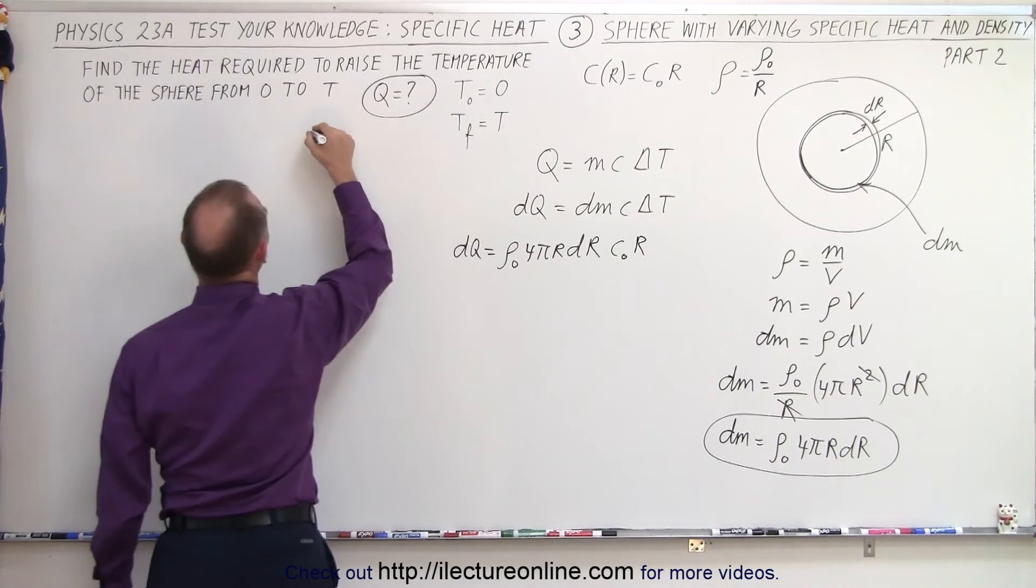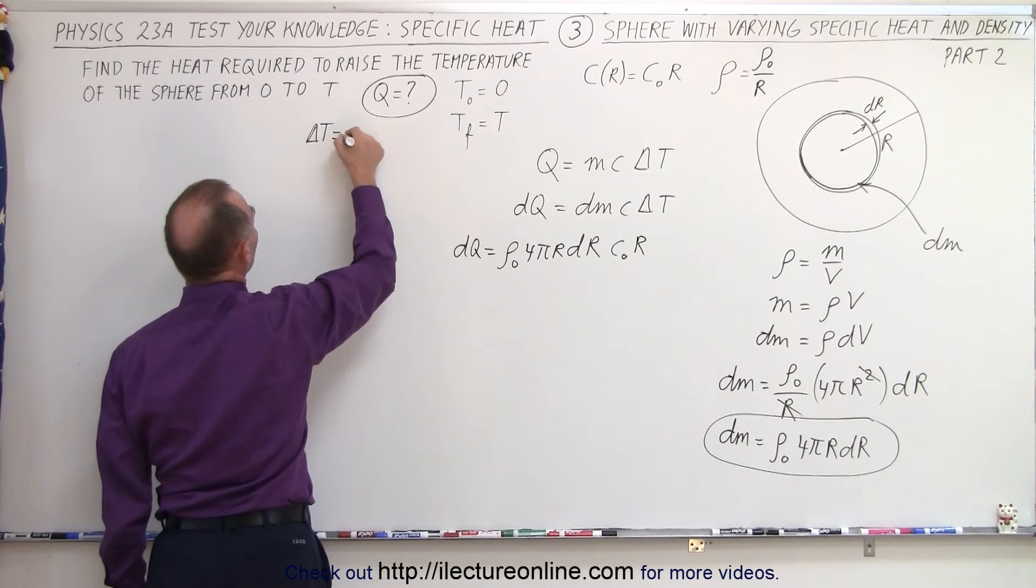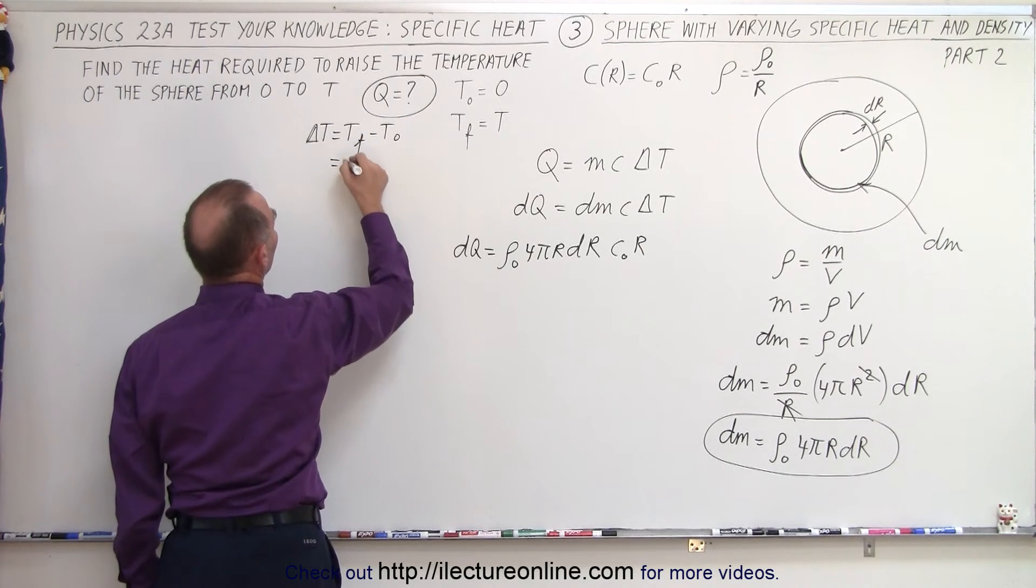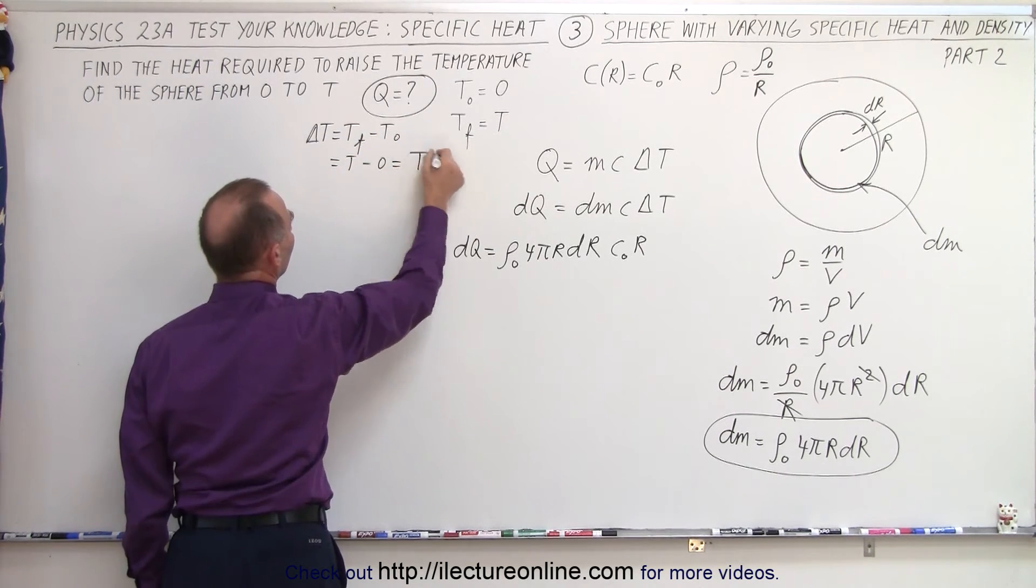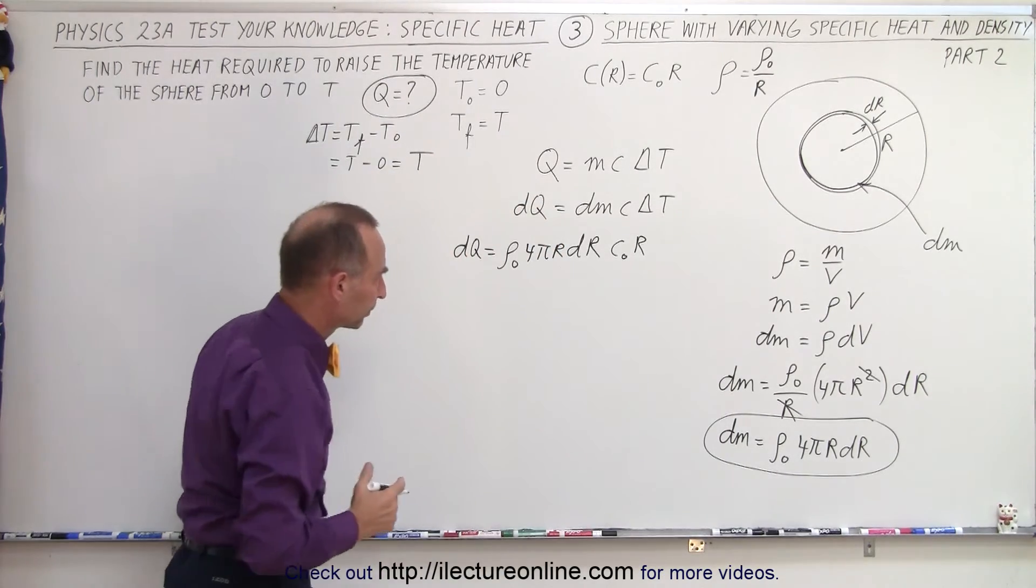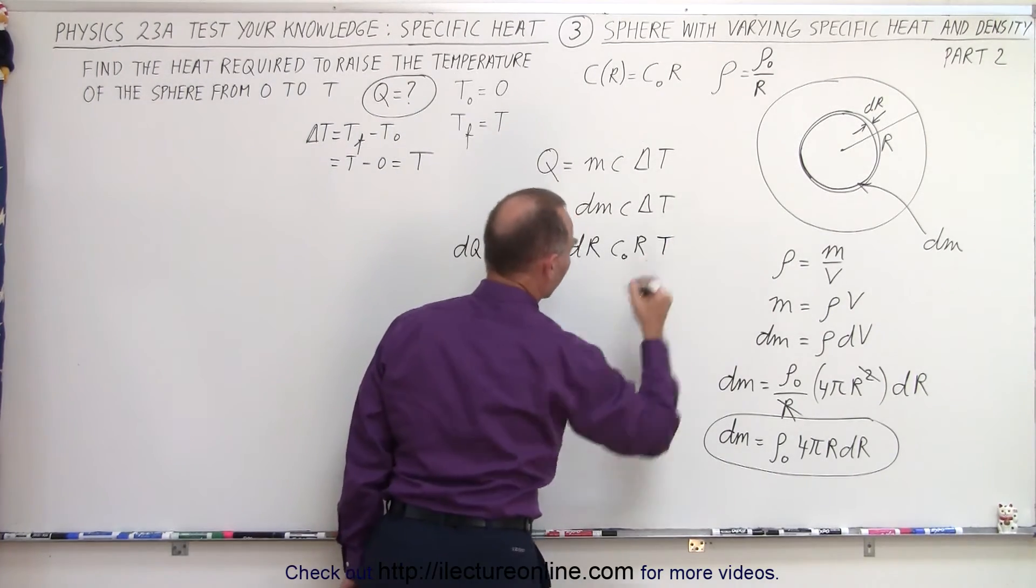And of course, delta T can be defined. Delta T is equal to T final minus T initial, which is equal to T minus 0, which is equal to T. So we can replace delta T by simply the final temperature. And let's put that over there.